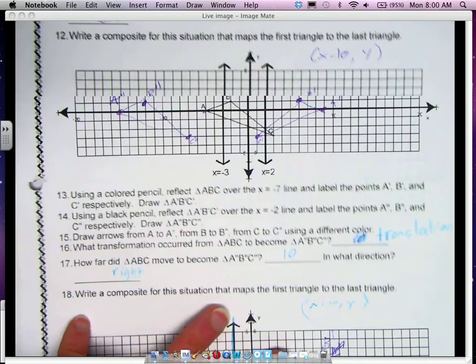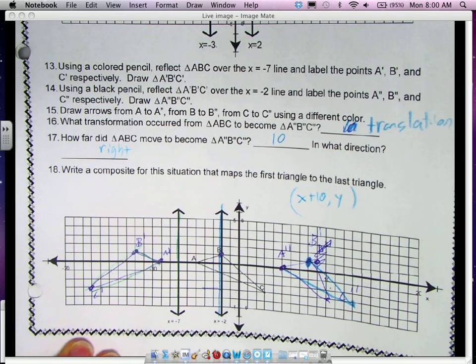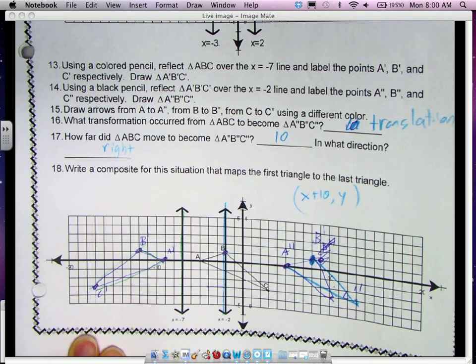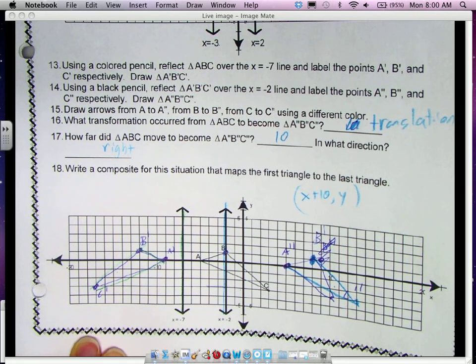Number 13 through 18, we reflected over x equals negative 7 first, then over x equals 2. You had to read the directions carefully. Make sure you do that for the quiz review and the quiz that's coming up. We got a translation. It was 10 units to the right, x plus 10 comma y.